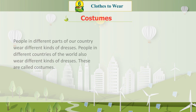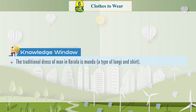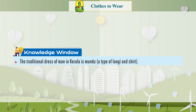Costumes: People in different parts of our country wear different kinds of dresses. People in different countries of the world also wear different kinds of dresses. These are called costumes. Knowledge Window: The traditional dress of men in Kerala is the mundu, a type of lungi worn with a shirt.